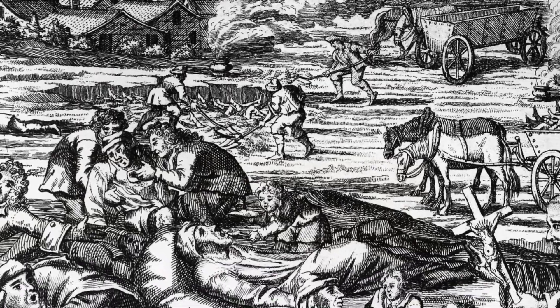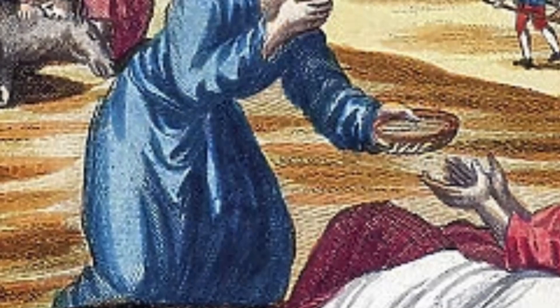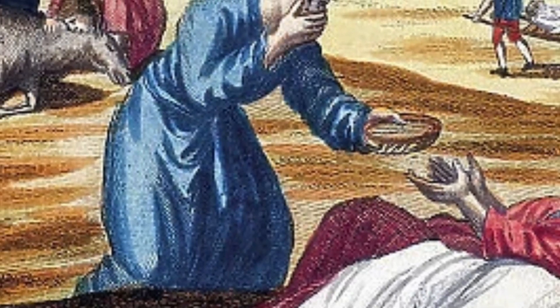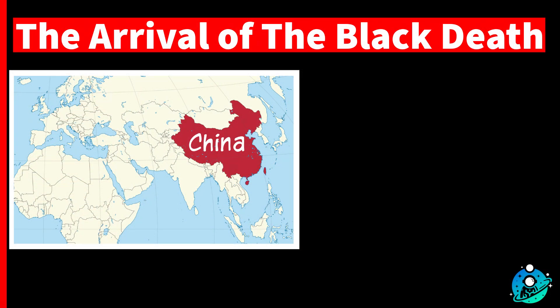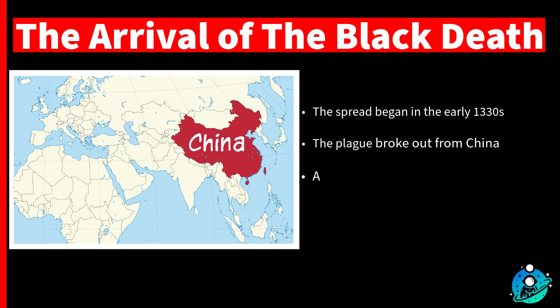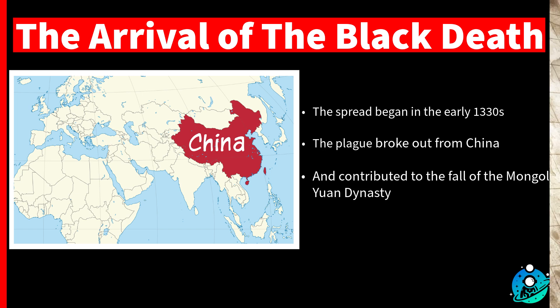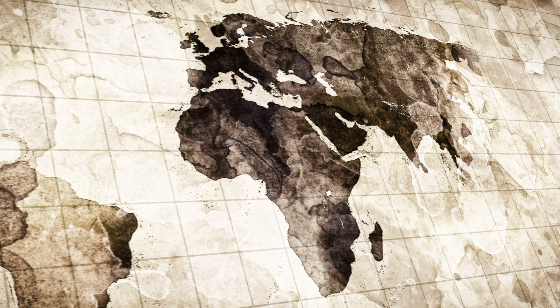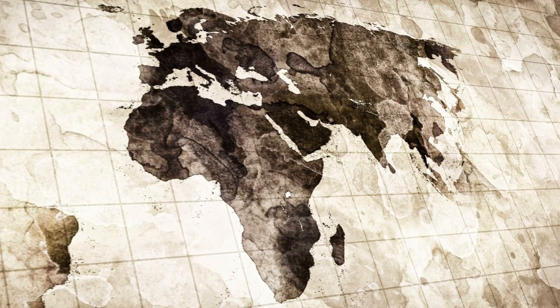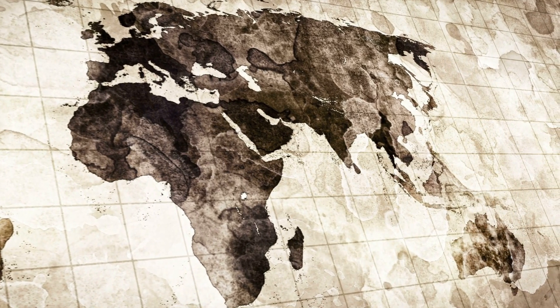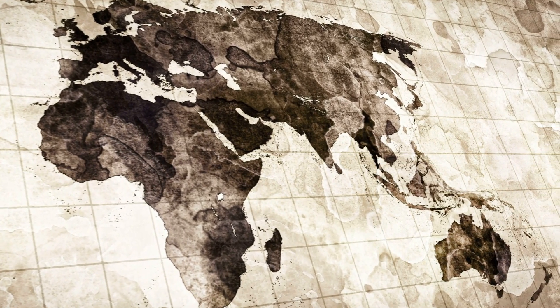The timeline of this tragedy begins in the early 1330s. The plague likely originated in China, with significant outbreaks occurring between 1331 and 1334. These outbreaks killed many and contributed to the fall of the Mongol Yuan dynasty. By the 1340s, the plague had spread to Central Asia, impacting regions such as Samarkand and Tashkent.